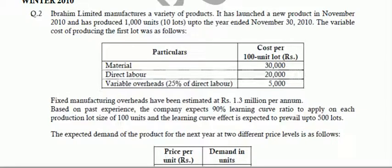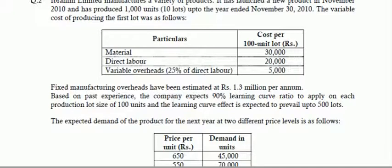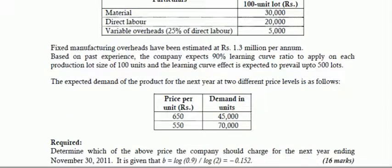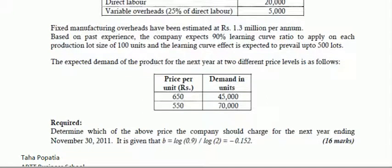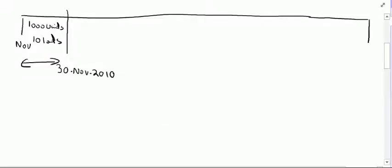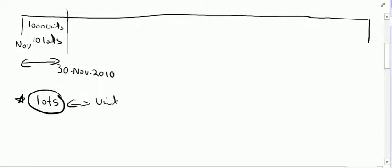The question says that the variable cost of producing the first lot was as follows — material consumed, direct labor, and variable overhead expenses are stated for one single lot or 100 units. Fixed manufacturing overheads are estimated at Rs. 1.3 million per annum. Based on past experience, the company expects a 90% learning curve ratio to apply on each production lot size of 100 units. The key point is that the learning is in lots, not in units.